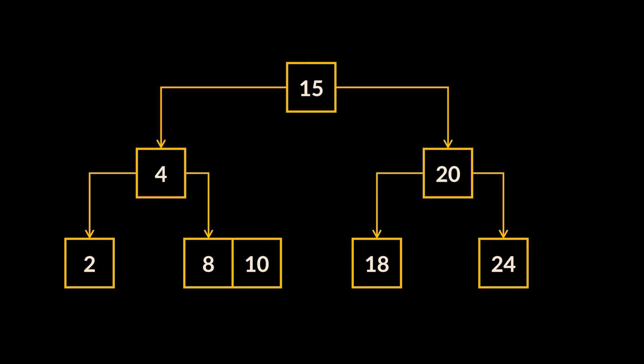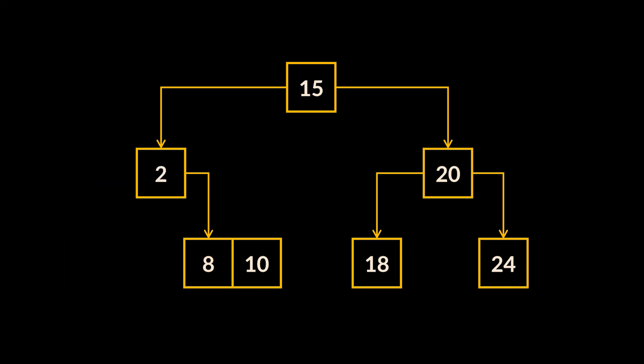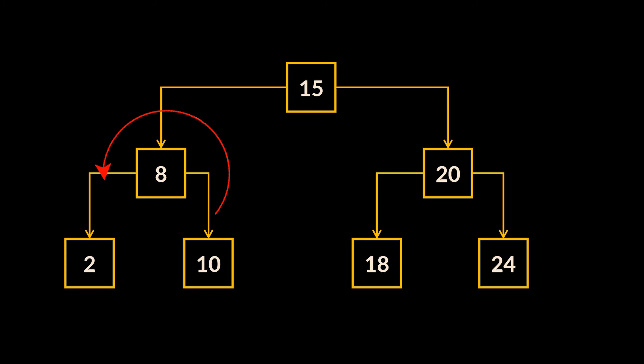Until now we've only deleted leaf nodes, but what if the node to delete is an internal node? Take node 4 as an example. This node acts as a separation value for its two children subtrees, so we need to find a replacement — either the largest element in the left node or the smallest element in the right node. Let's replace it with its left child. This puts us in a situation similar to removing an item from a leaf node. The immediate right sibling of the now-empty node is full, so we balance using a left rotation: bring up the first element of the right sibling to the parent as the new middle item, and bring down the old separator to the end of its left child.